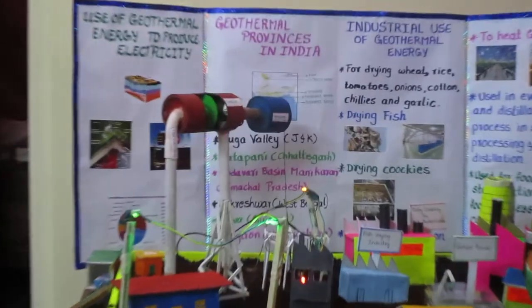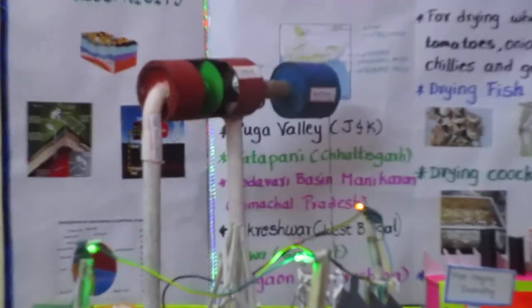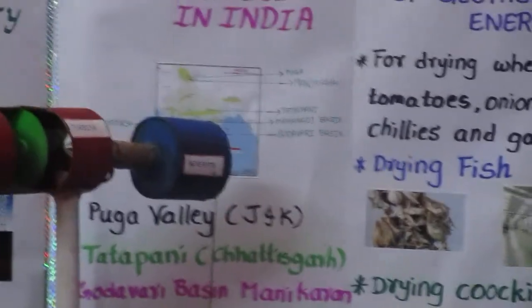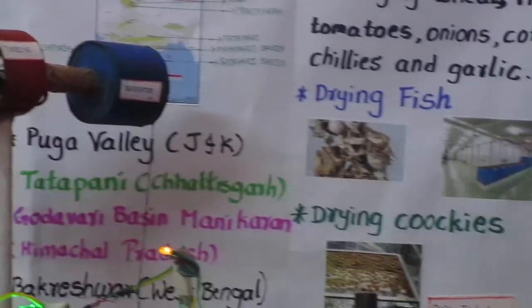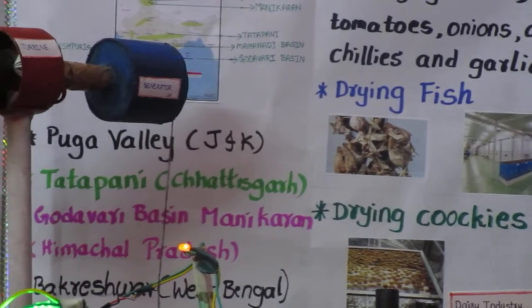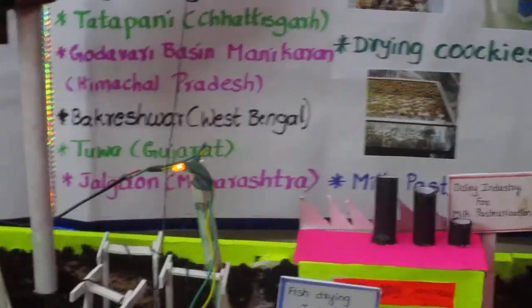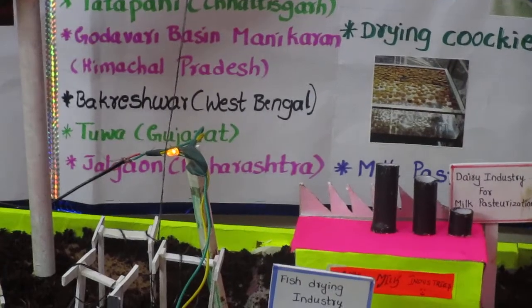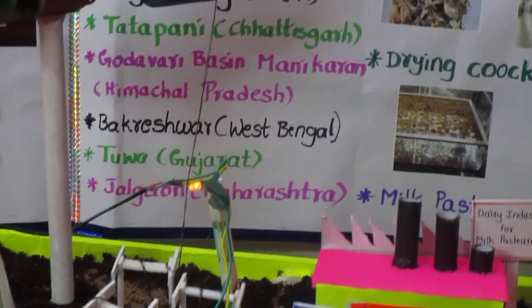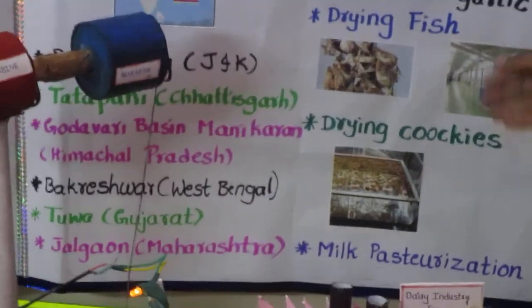The notable places are Puyuga Valley in Jammu and Kashmir, Tata Pani in Chhattisgarh, Gaudabari Basin Mahikaran in Himachal Pradesh, Bakareshwar in West Bengal, Toa in Gujarat, and Jalagaon in Maharashtra.